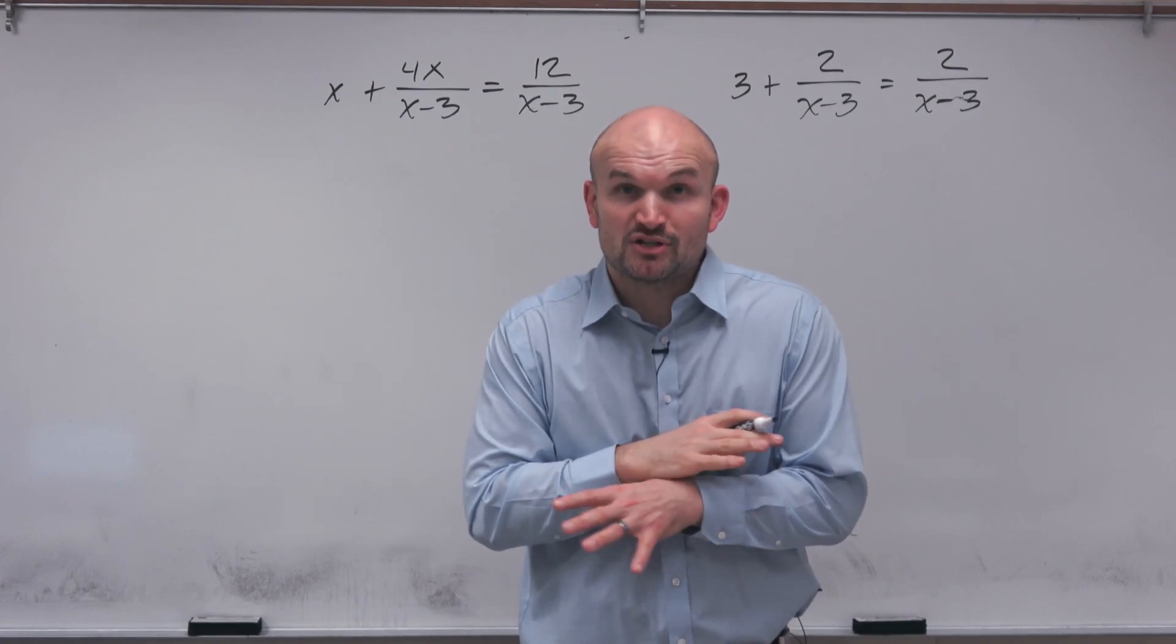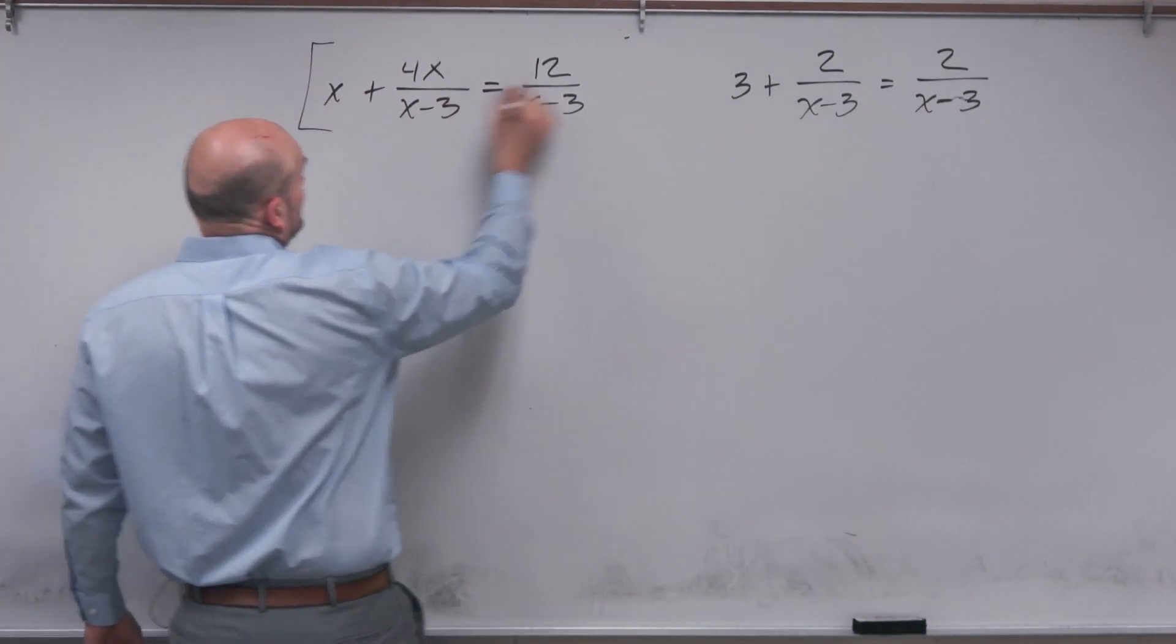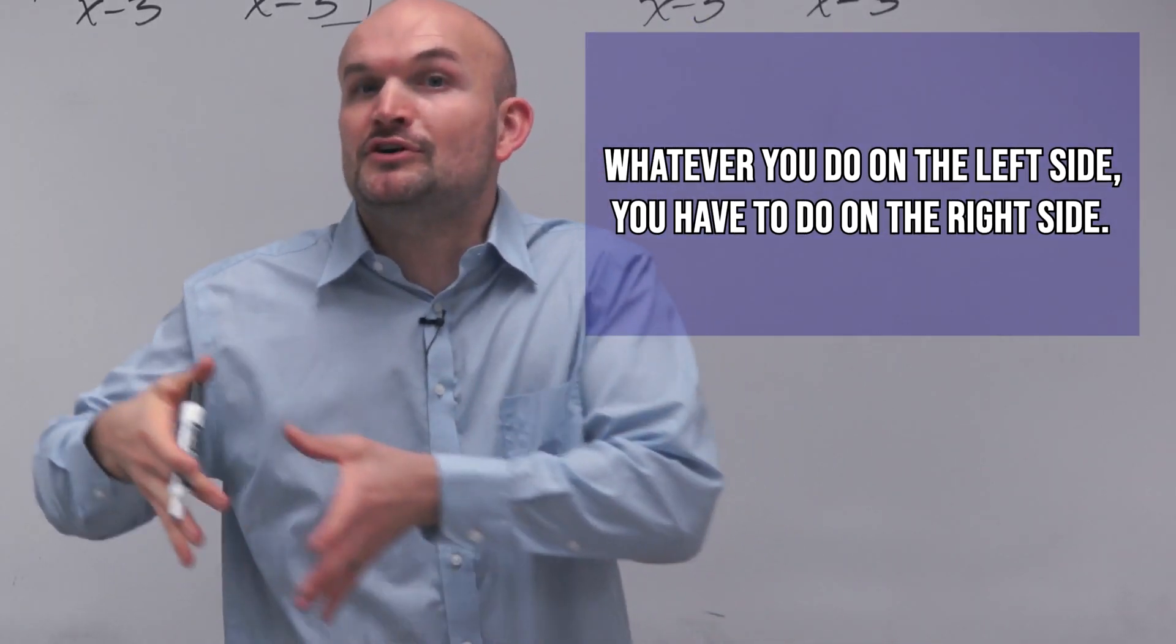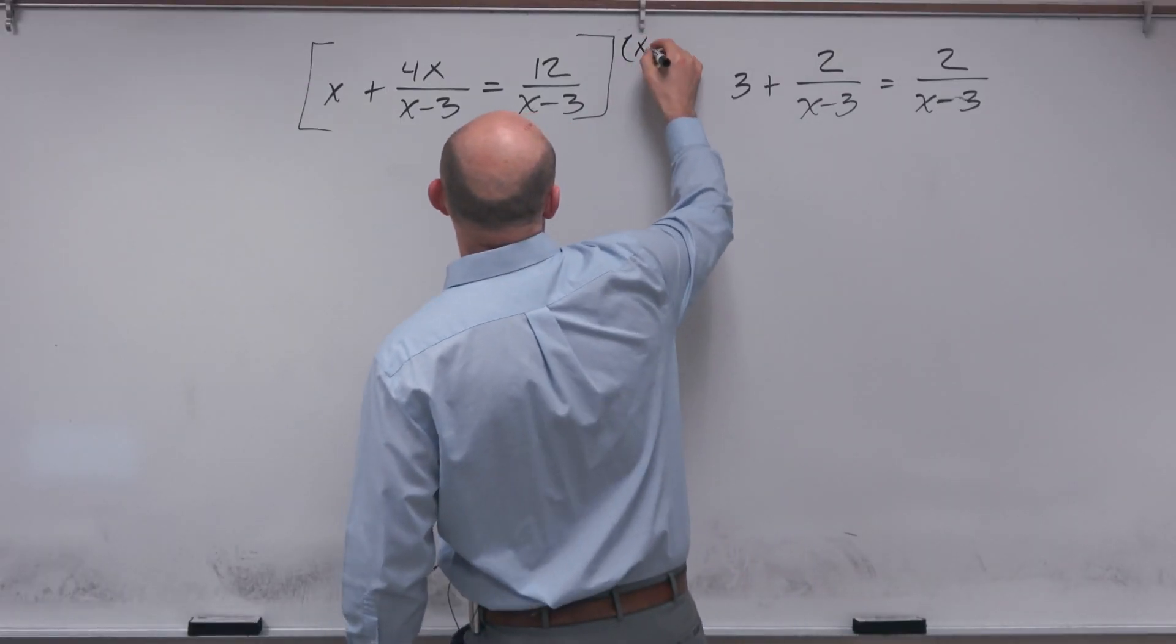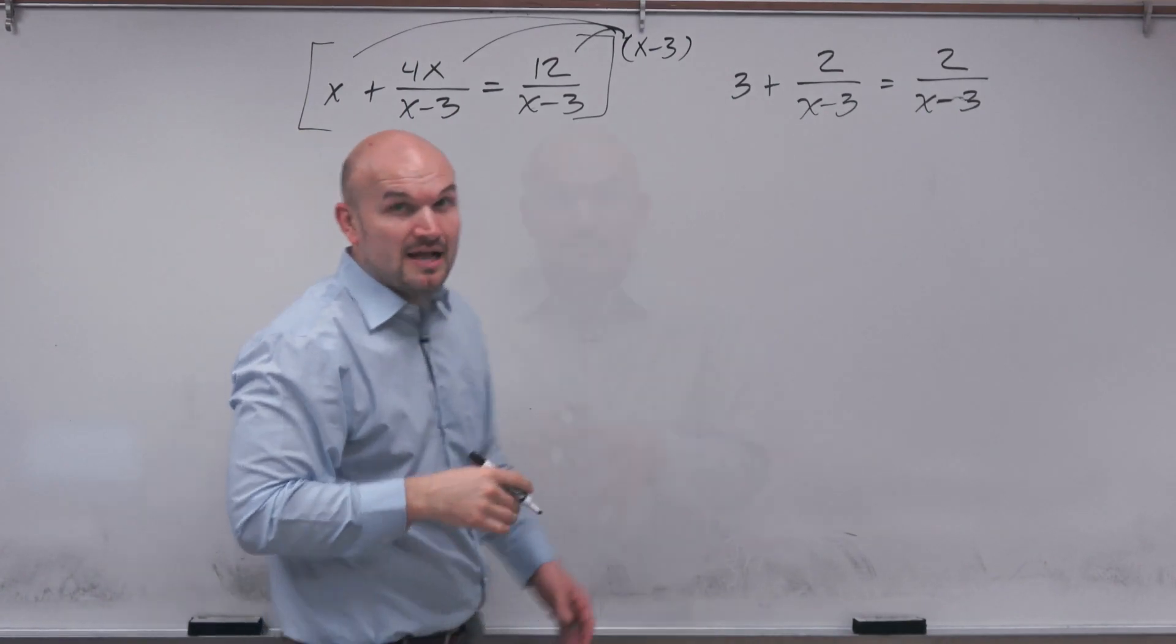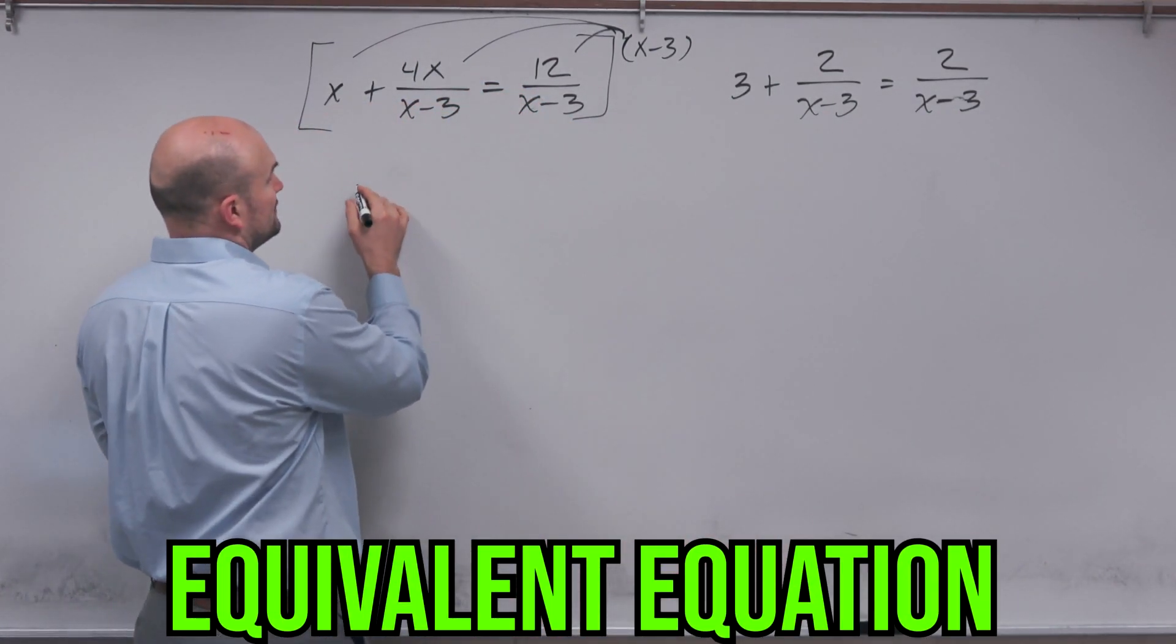So what I'm going to do is I'm going to multiply everything by x minus 3. Because again remember the properties of equalities, whatever you do on the left side you have to go and do on the right side and as long as you multiply everything times x minus 3 you are producing what we call an equivalent equation. It's not going to be changing the value of the equation.